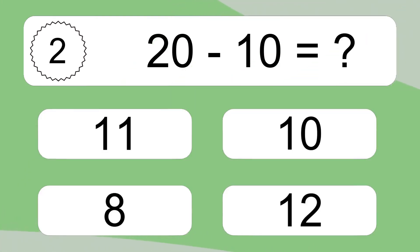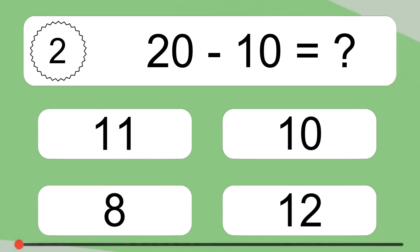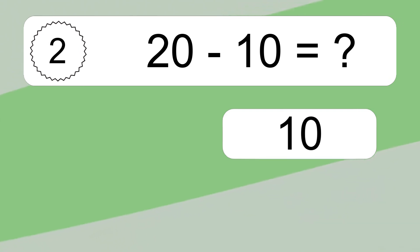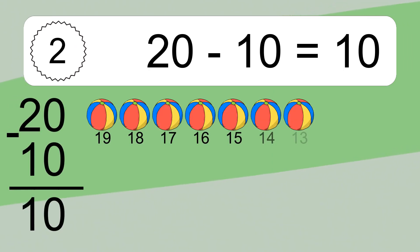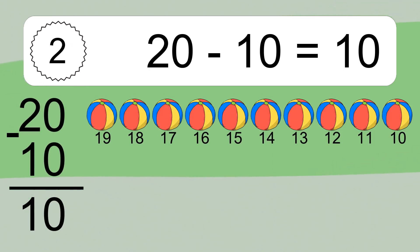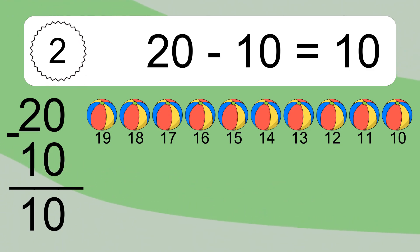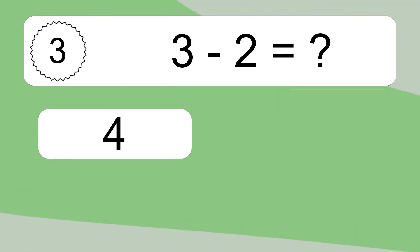20 minus 10 equals what? 20 minus 10 equals 10. Let's count it: 19, 18, 17, 16, 15, 14, 13, 12, 11, 10.